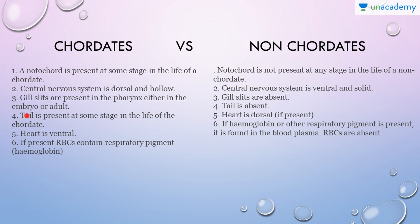The post-anal tail is present at some stage in the life of chordates and is absent in non-chordates. Similarly, the heart is ventral in chordates, whereas in non-chordates, if the heart is present, it is a dorsal heart.